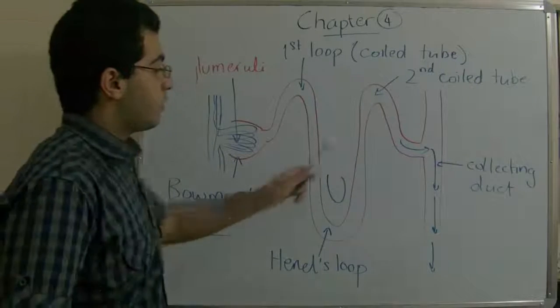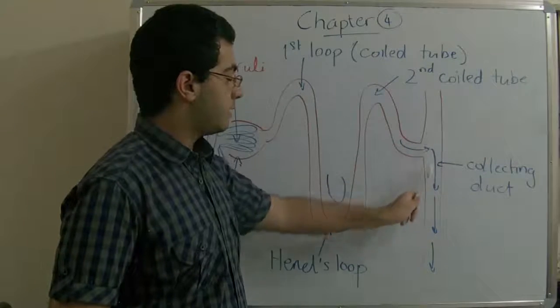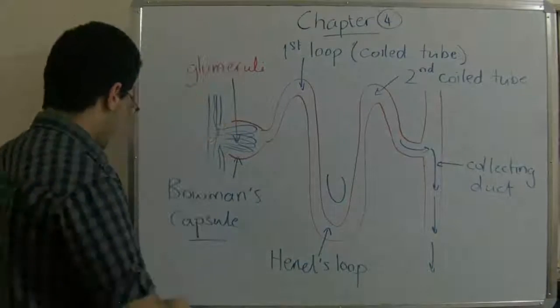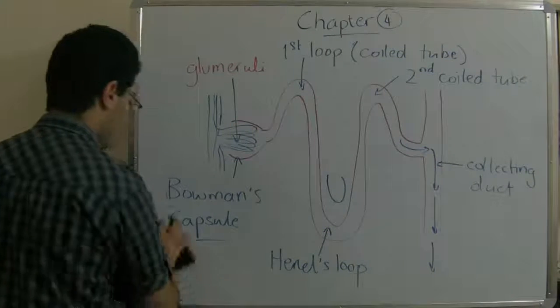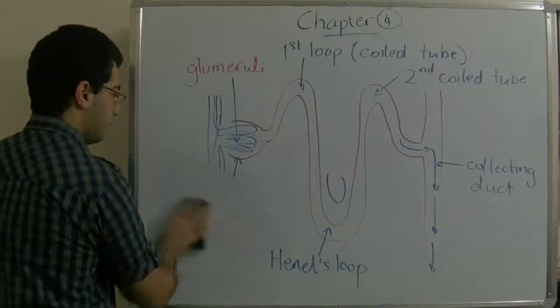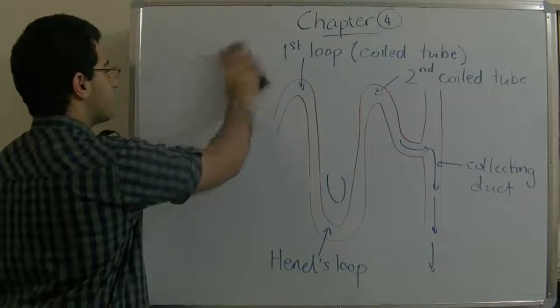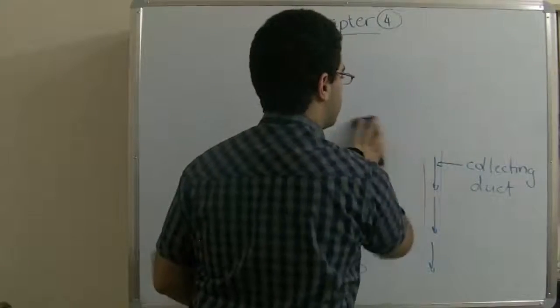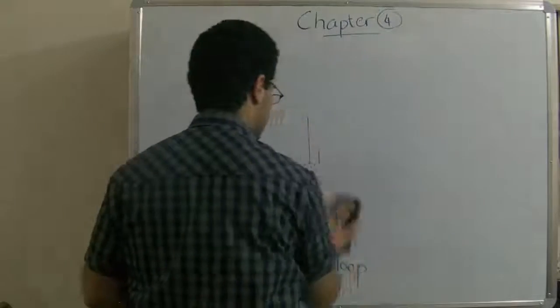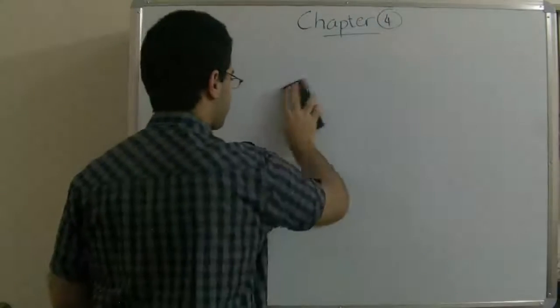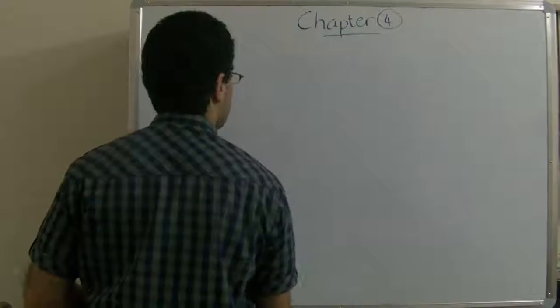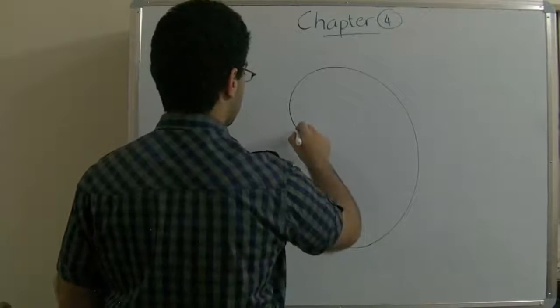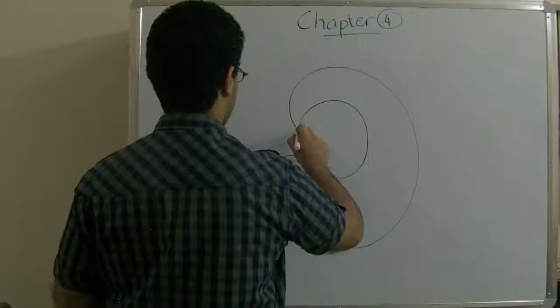So after the urine is collected and it goes through the collecting duct, the collecting duct opens through the pelvis of the kidney. Here in the kidney, we see that this part here.